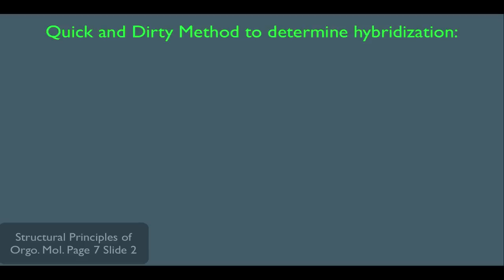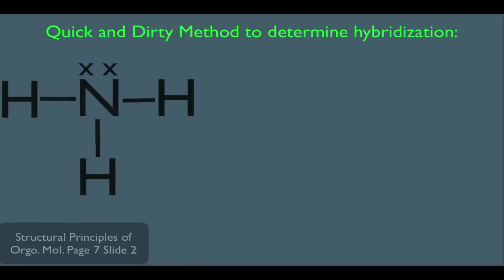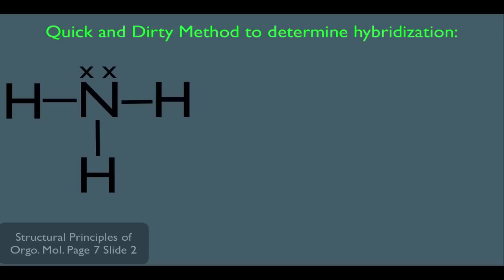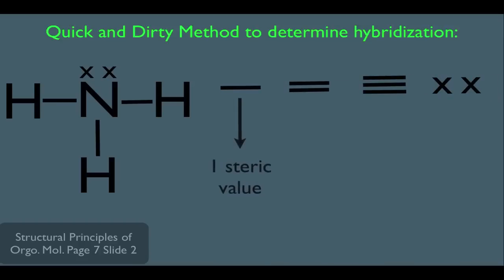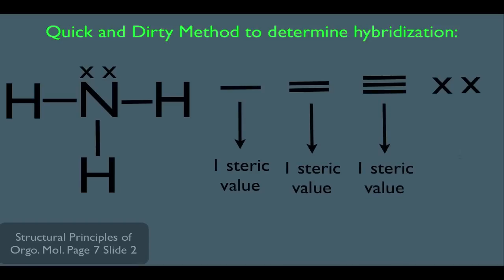In this online lecture we're going to talk about the quick and dirty method to determine hybridization and what this helps us do and understand. So let me show you how this works. The first thing you should understand is that single, double, and triple bonds, and a lone pair of electrons all have what's called one steric value. Each one is worth one steric value or one point.